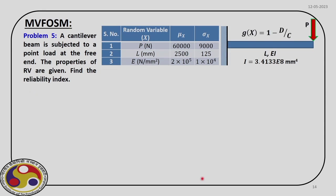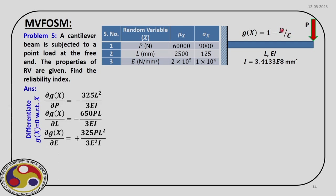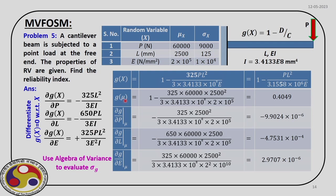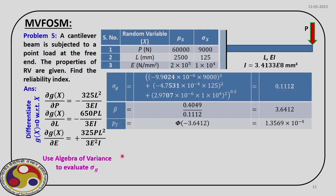Now we repeat the problem using the alternative limit state format 1 − d/c. The format change alters the derivatives, so we recompute the first derivatives of g with respect to P, L, and E. The mean of g is now 0.4049 and σg = 0.1112, giving β = 3.6412, and Pf = Φ(−β) = 1.3569×10⁻⁴.